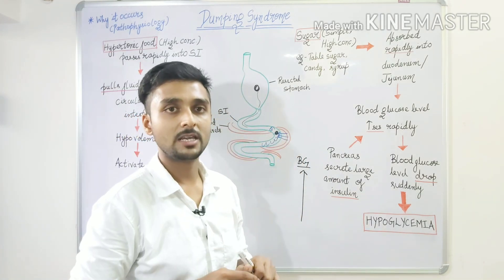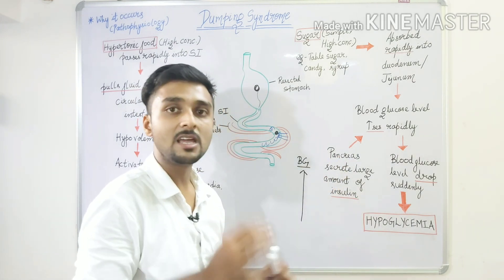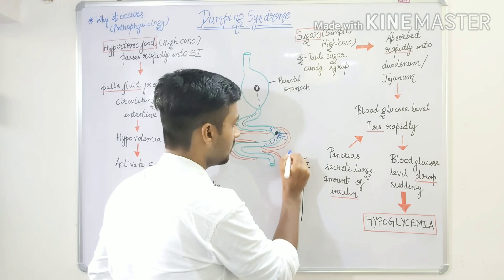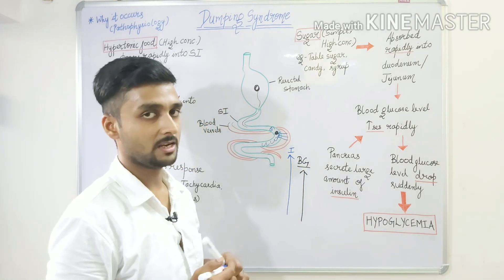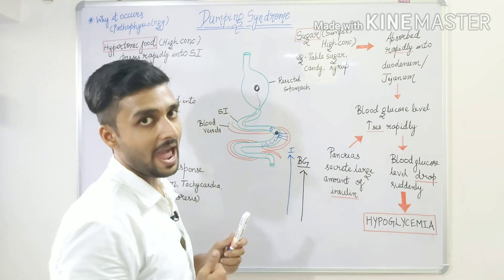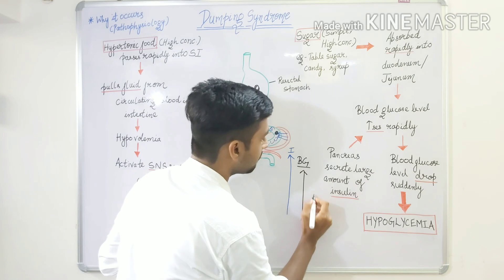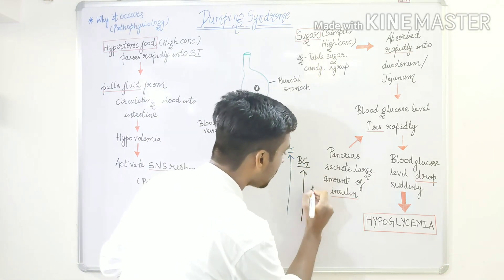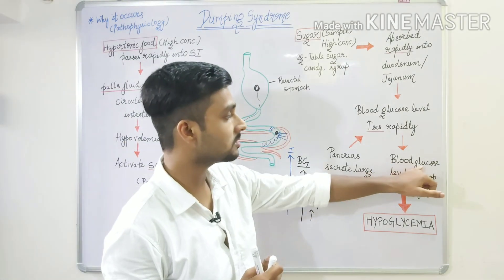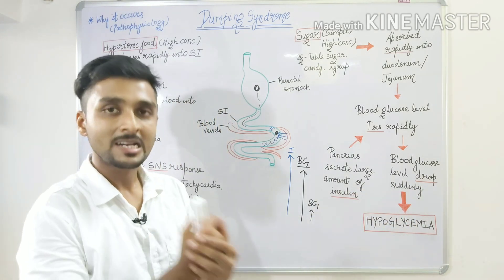Because the blood glucose level has increased rapidly, our pancreas compensates by releasing insulin. The insulin release increases, which then causes the blood glucose level to decrease. But it decreases beyond normal — the blood glucose level drops abruptly, leading to hypoglycemia.